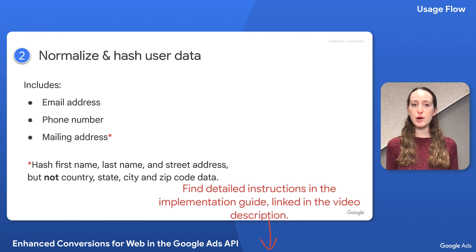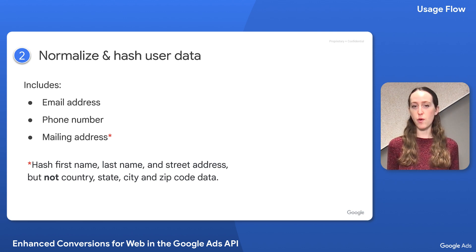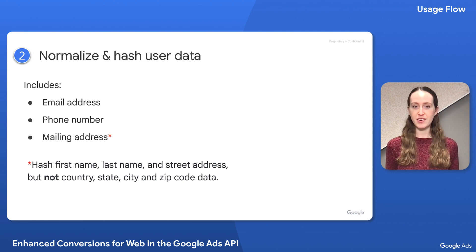If you don't properly normalize and hash the user data before sending it to the Google Ads API, you won't necessarily see errors in your response. Instead, the upload could succeed, but Google Ads won't find a match for the data you uploaded, leading to fewer reported conversions. For that reason, this step is especially important to get right.